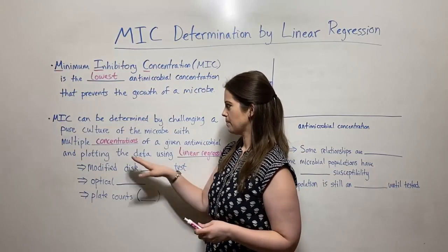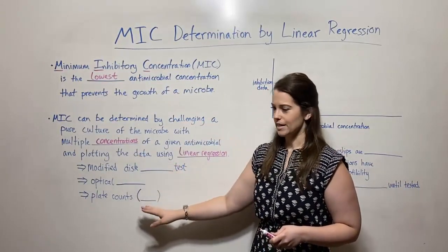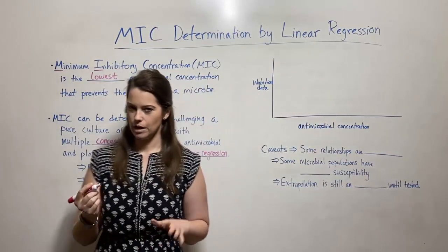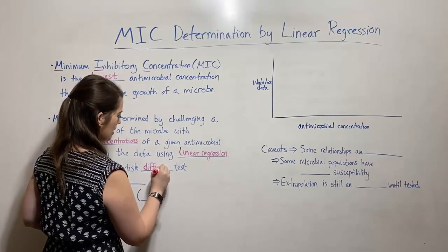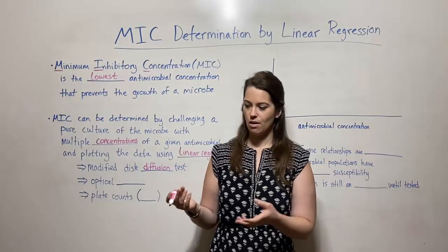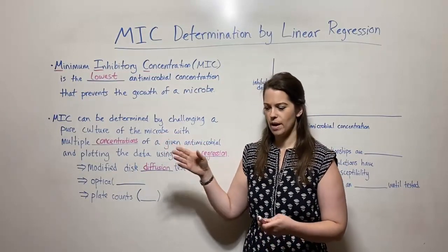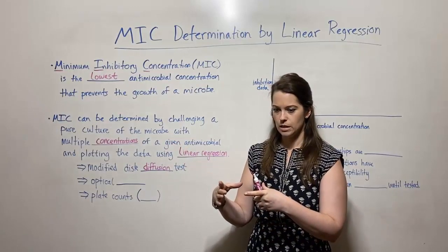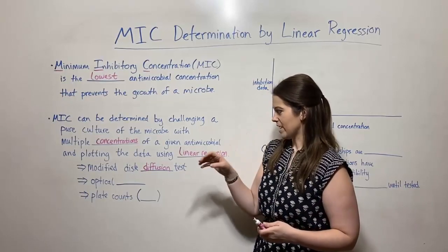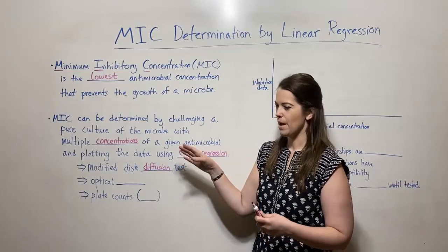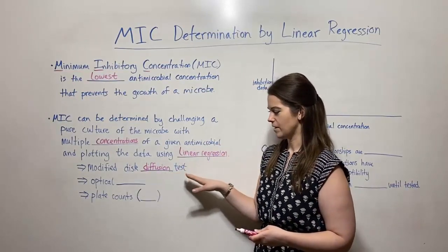First, let's talk about what kinds of data you might be looking at. Depending on how you do the challenge, you can have different kinds of data. For example, you can do a kind of modified disk diffusion test — think like a Kirby-Bauer test. When I say modified, it's because depending on the particular microbe you're using, you might have to use different types of agar, different types of media. You might have to start with different amounts to make sure you get a good thick lawn of growth. But some kind of disk diffusion test.